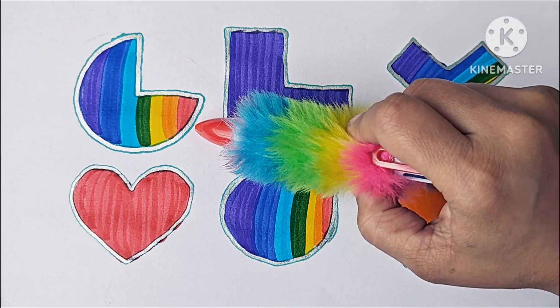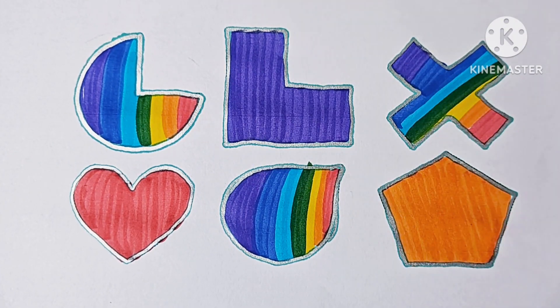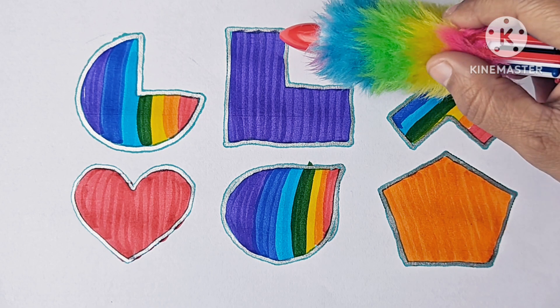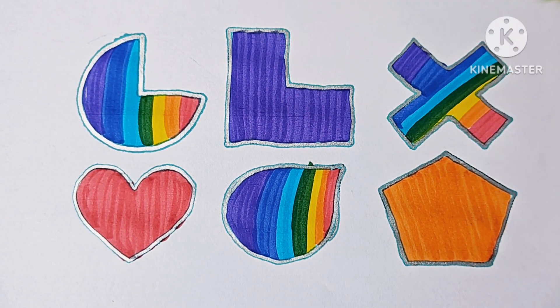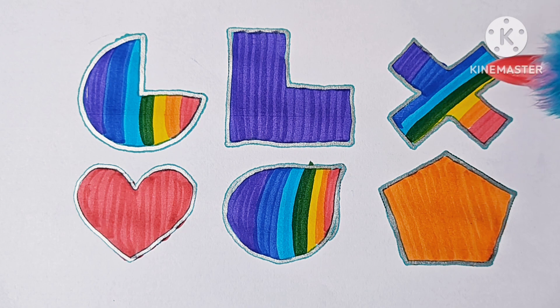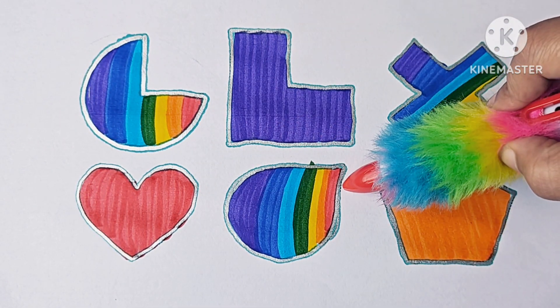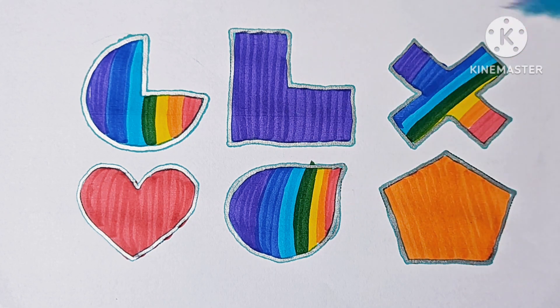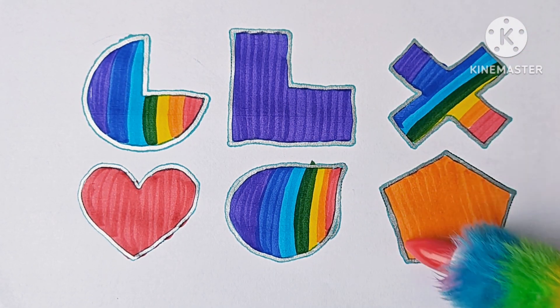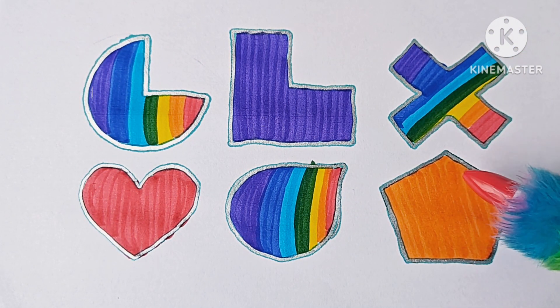This is pi or partial circle. This is L shape. This looks like letter L. This is multiplication symbol. This is heart. It is a shape. This is teardrop. It is also a shape. This is pentagon. It has five sides. It is a 2D shape.